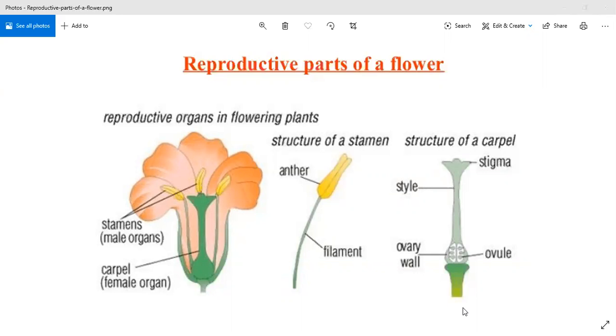Now the female reproductive organ, carpel or pistil. Carpel has three major parts: first is stigma, second is style, and third is ovary.